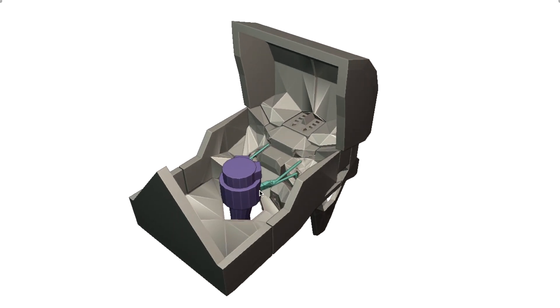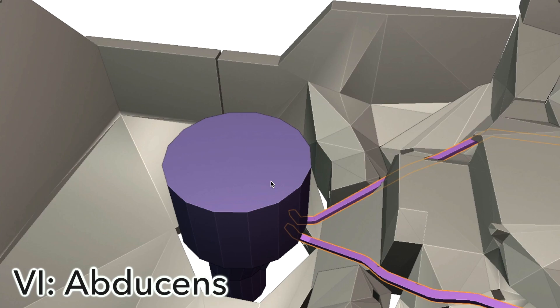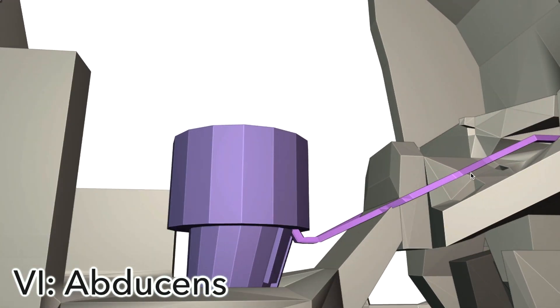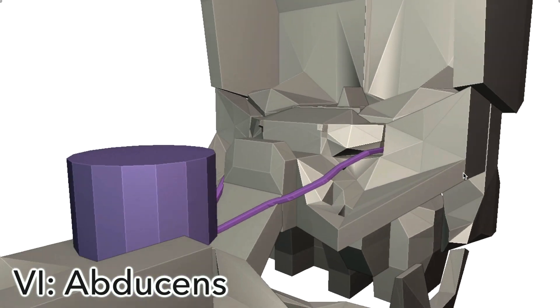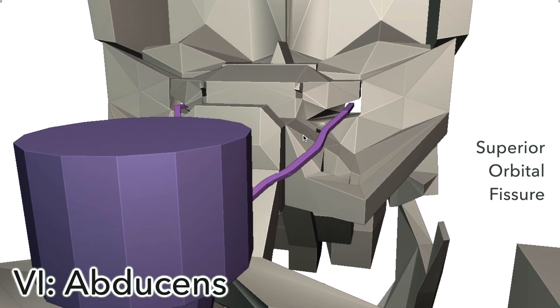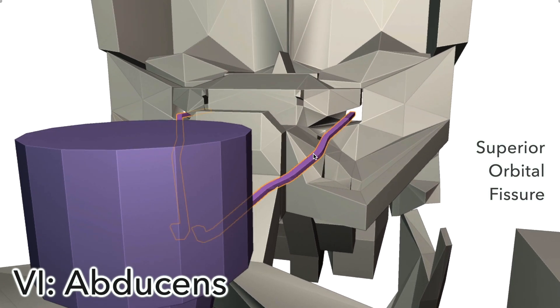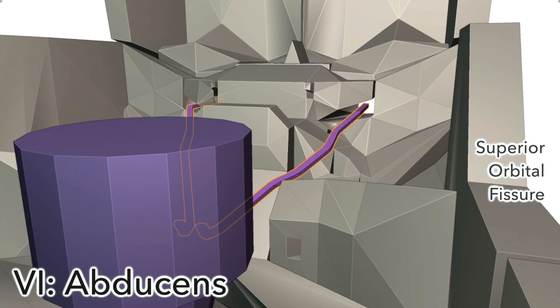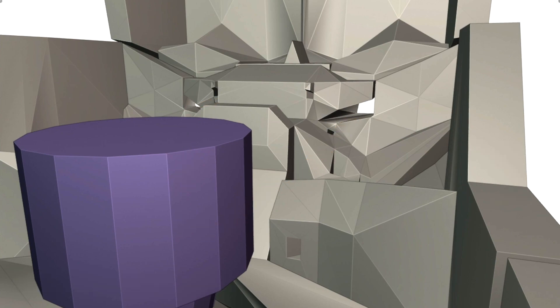Number six now. The abducens nerve, which comes from back here, where the medulla meets the pons. It enters the orbit again through the superior orbital fissure, which is becoming quite crowded at this stage, so into the orbit it goes, and it innervates the last of our eye muscles, the lateral rectus muscle. This muscle abducts the eye, which is where the name of the abducens nerve comes from.